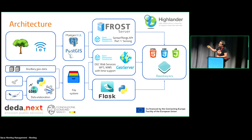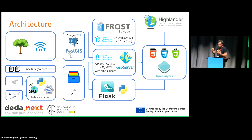The data is then served to a simple web dashboard enabled by OpenLayers. The second big group of data comes from satellite or airborne imagery, elaborated with different tools, stored in a file system, and then published through a web server or through a different channel for a subset of activities, and again shown in a web dashboard.